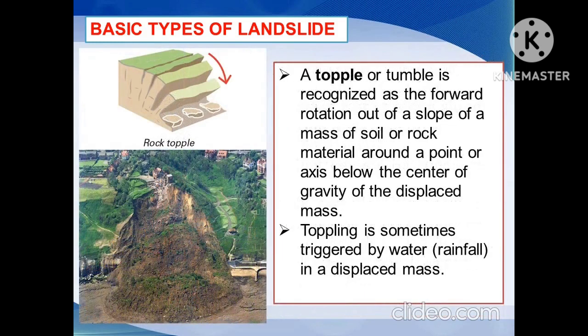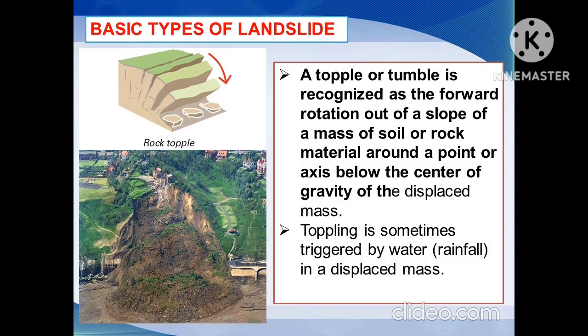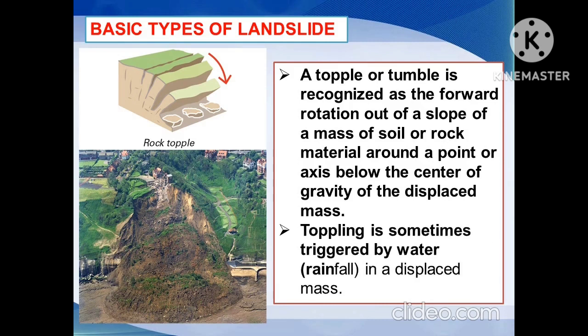Another type of landslide is a topple or tumble, recognized as a forward rotation out of a slope of a mass of soil or rock material around a point or axis below the center of gravity of the displaced mass. Toppling is sometimes triggered by water or rainfall in the displaced mass.